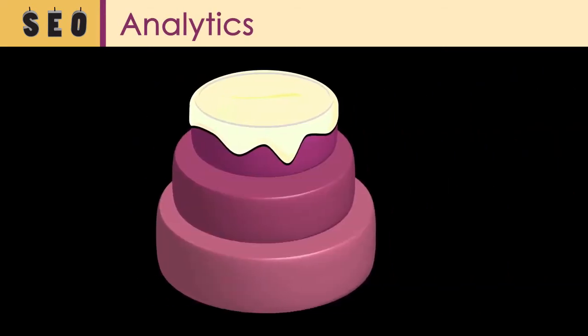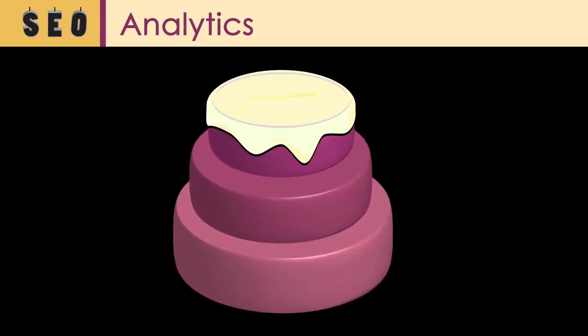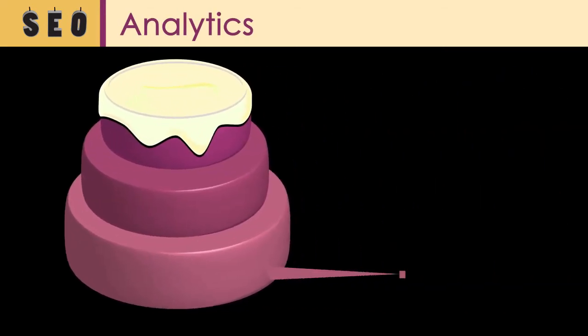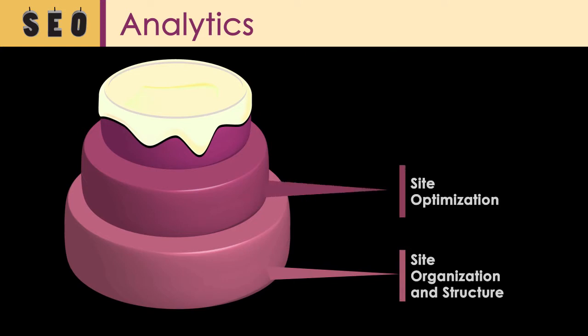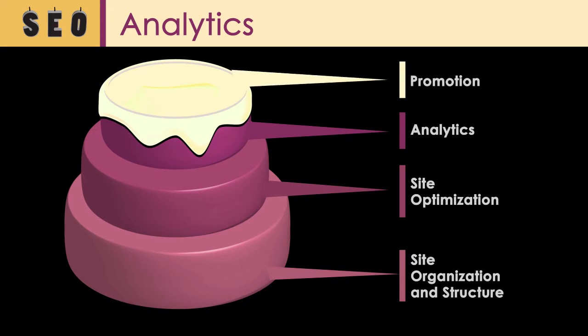If you think of SEO as a three-layer cake, the layers would be site organization and structure, then site optimization, then analytics. Finally, the finishing touch, or the frosting, would be promotion that includes, among other things, social media, blogging, and paid ads.